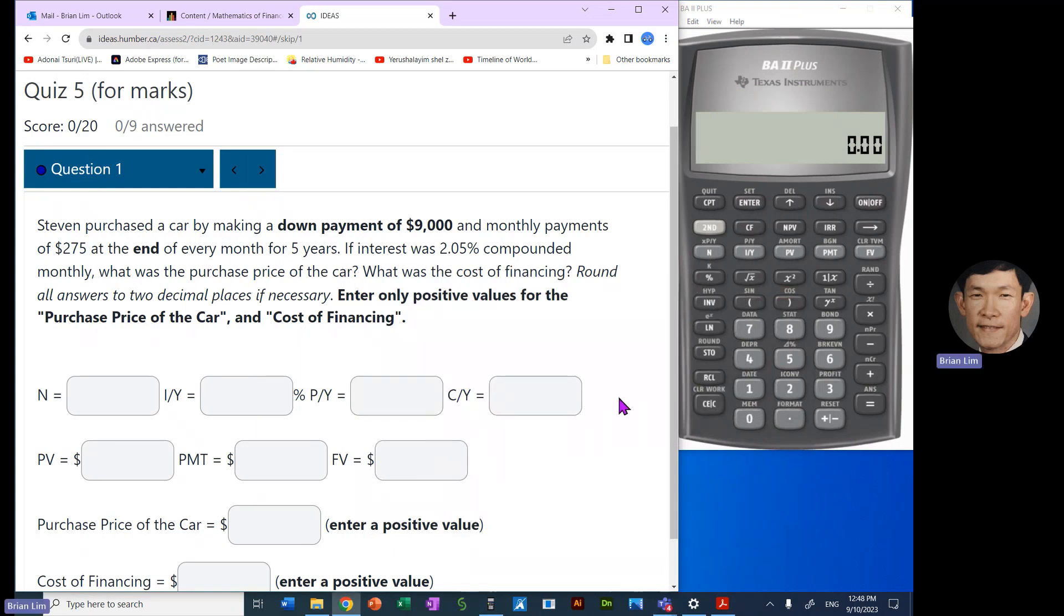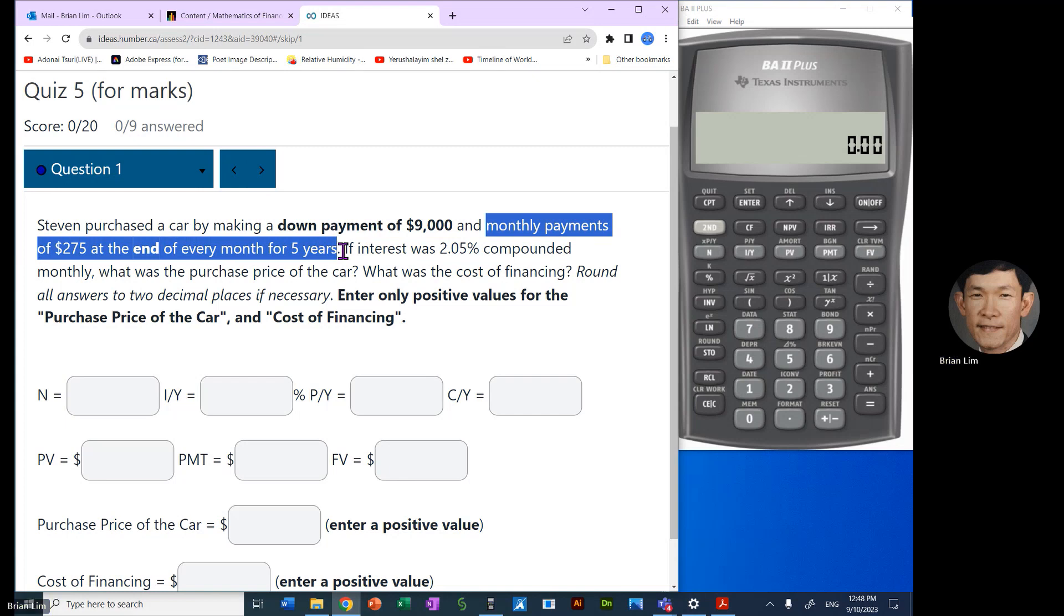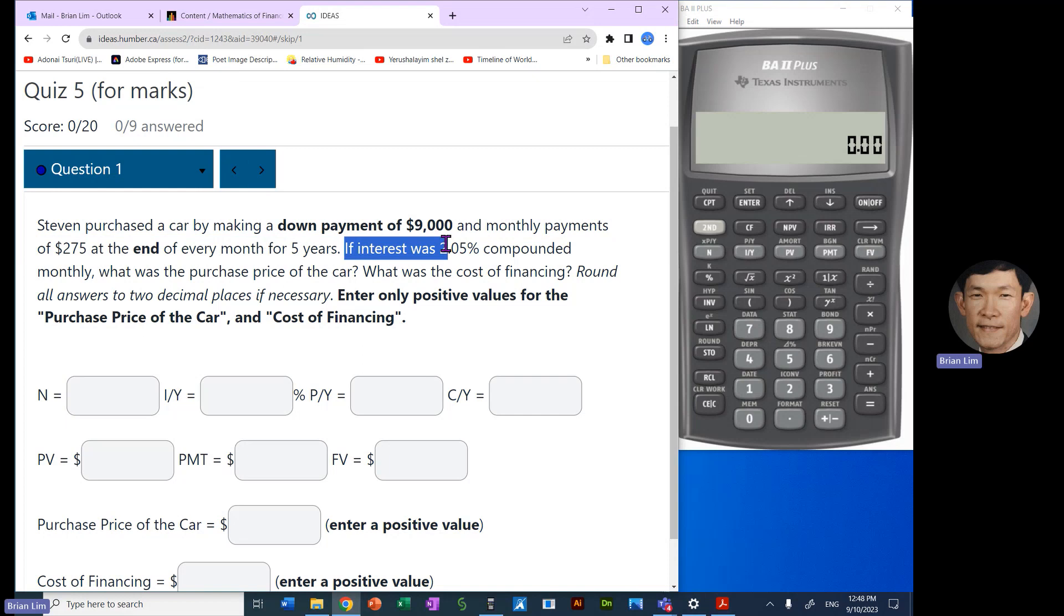Let us start this episode with this question here. Stephen purchased a car by making a down payment of $9,000 and monthly payments of $275 at the end of every month for five years. The interest was 2.05% compounded monthly. What was the purchase price of the car? And what was the cost of financing?